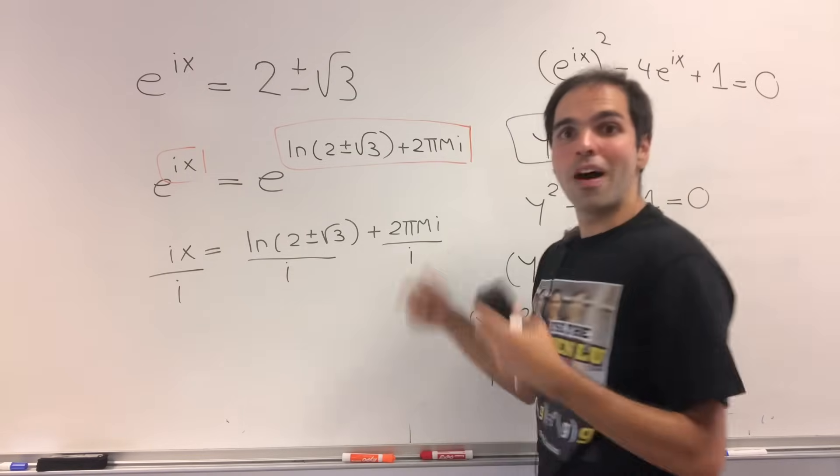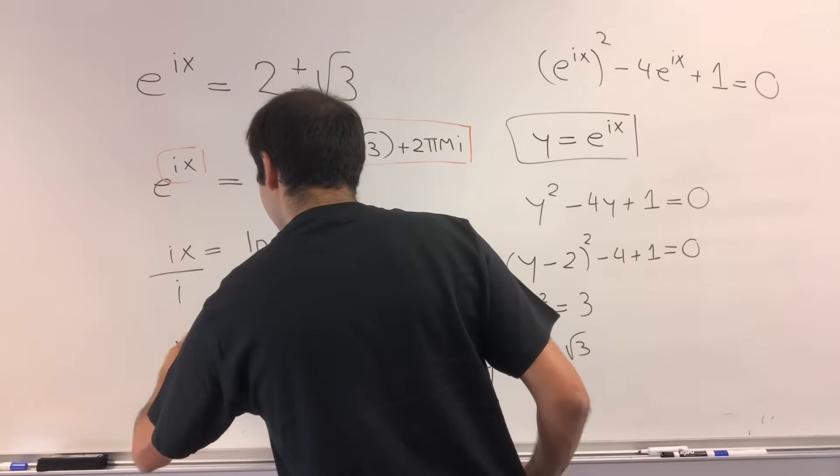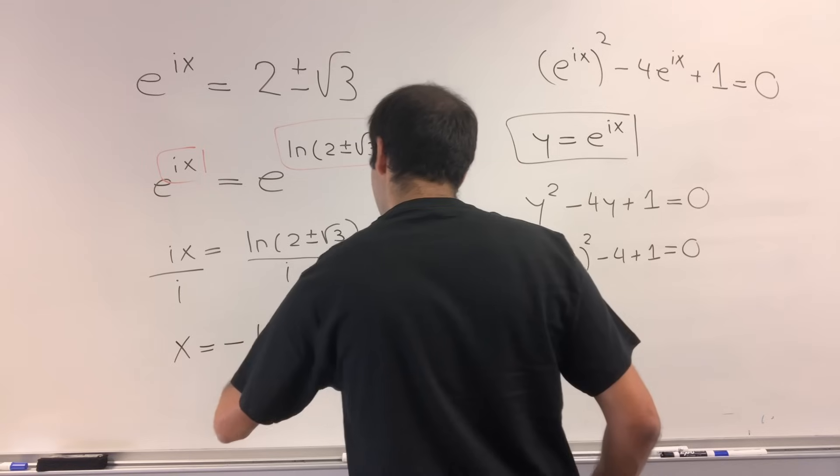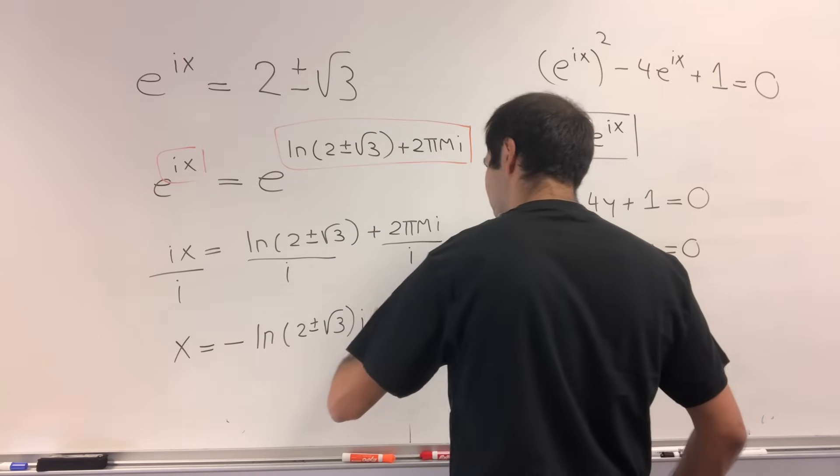So summa summarum, after everything, we get that x is minus ln of 2 plus or minus square root of 3 times i, plus 2 pi n.